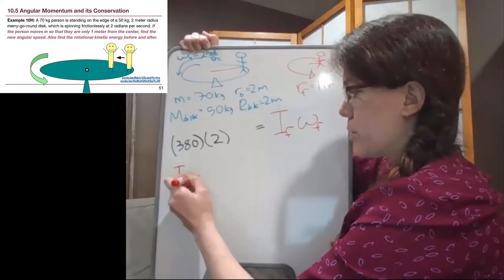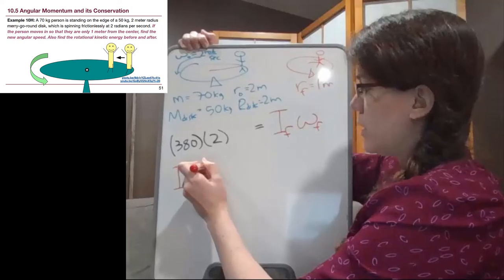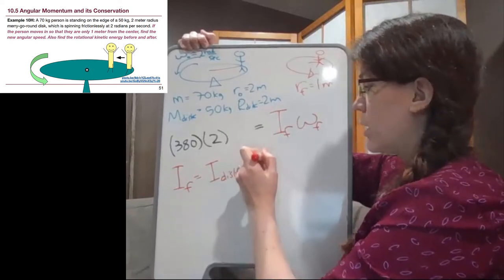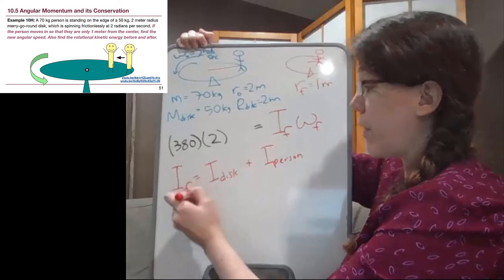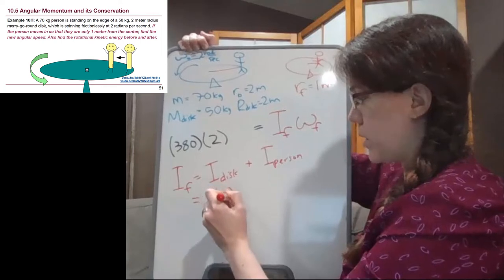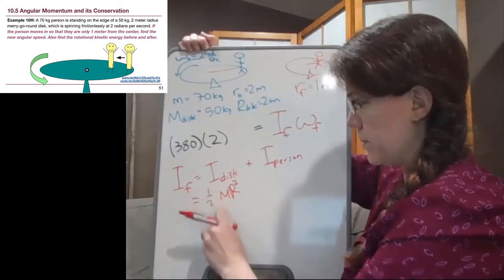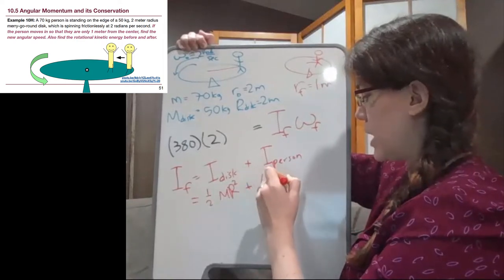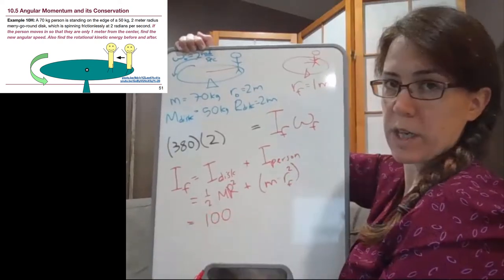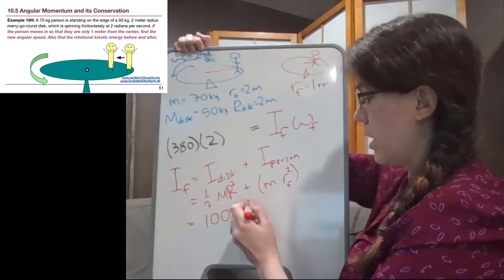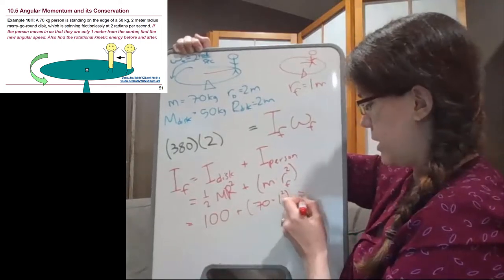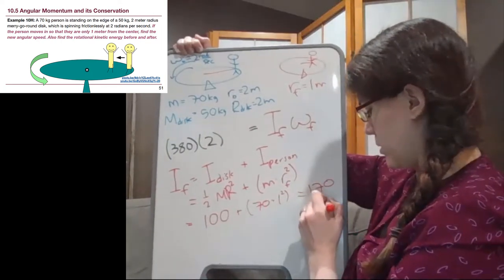So the final moment of inertia here is the moment of inertia of the disk. And the disk has not changed shape. Plus the moment of inertia of the person at the end of the problem. And that person has moved. So the disk is still one half times mr squared. And the person now is that final location squared times the mass. So we still have 100 from before. I'm not going to re-plug in the numbers. It's still 100 for the disk. But now we have 70 times 1 squared. So we're going to have 100 plus 70 is 170 kilograms times meters squared.